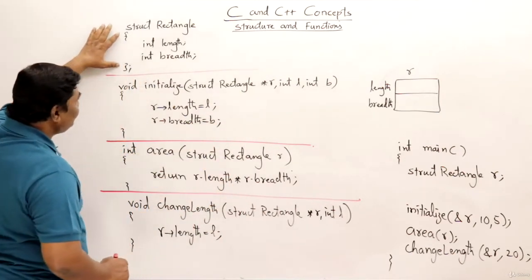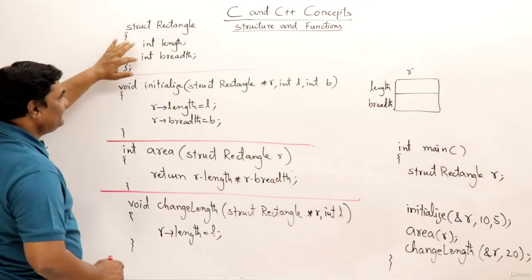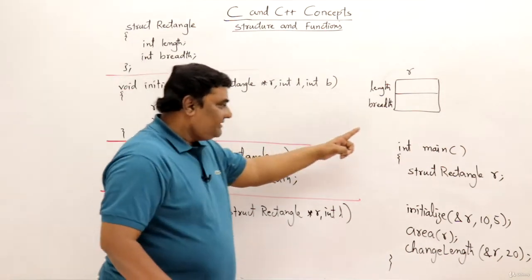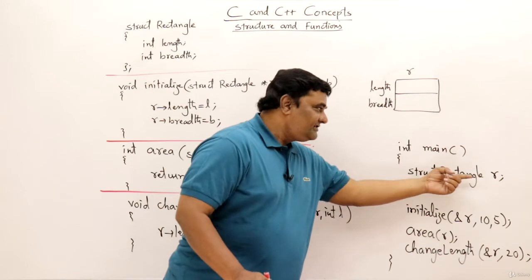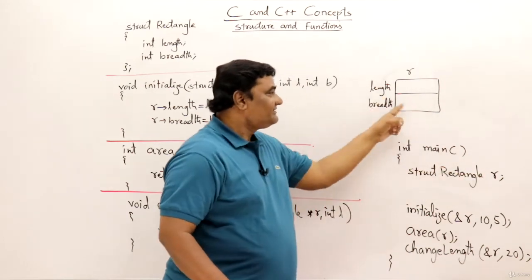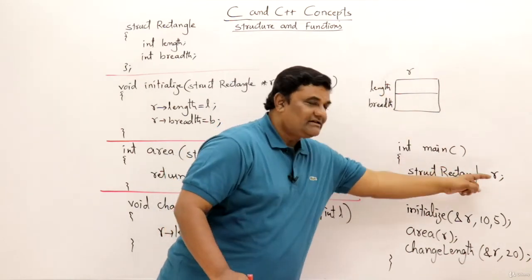I have a structure for rectangle which we have already seen having length and breadth, and this is the main function. Main function is having a variable of type rectangle that belongs to main function, that is R.